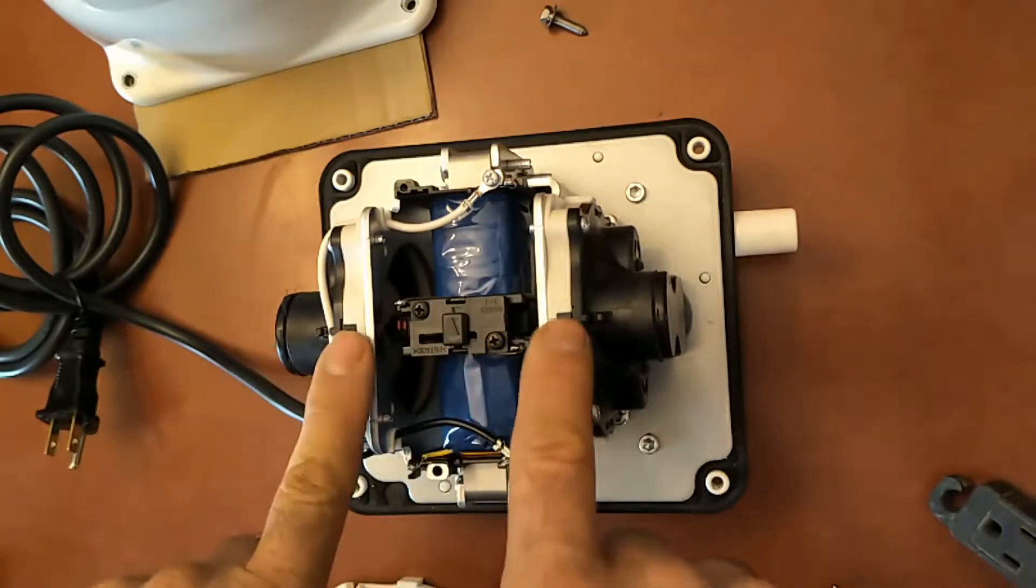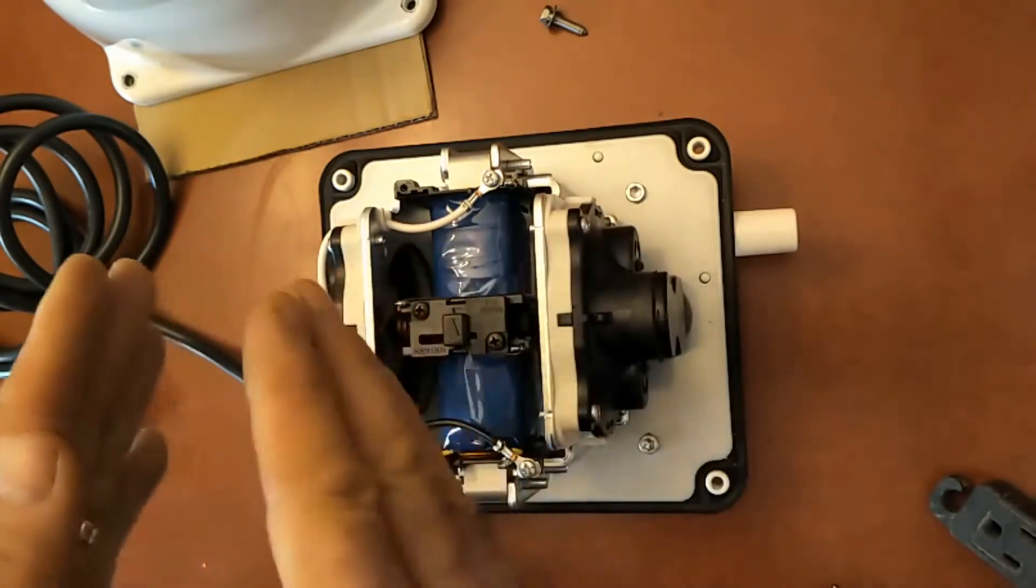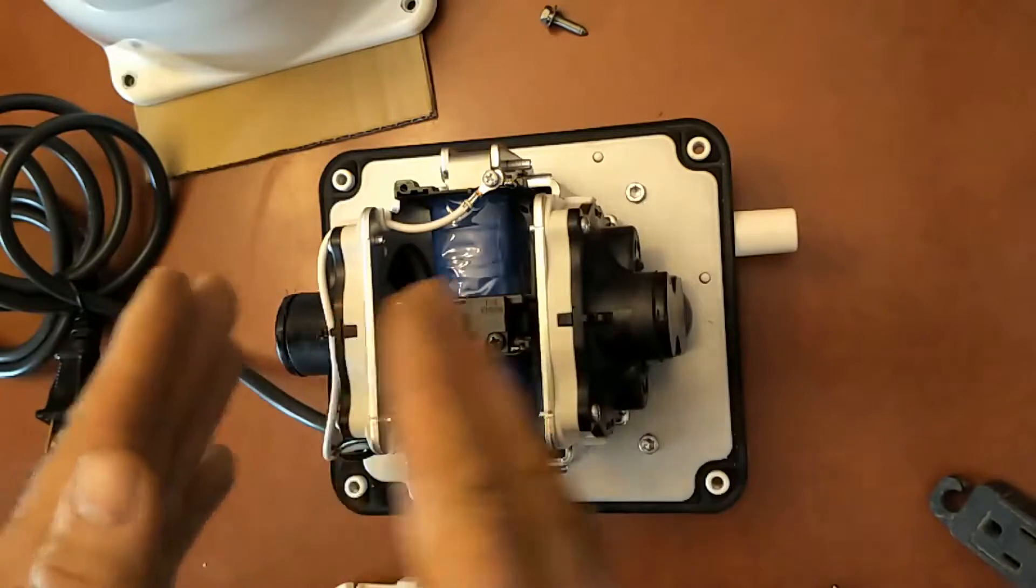There's actually a diaphragm and chamber block on either side. It's a two-way pump, so air is always moving one way or the other as the magnet shuttles back and forth.